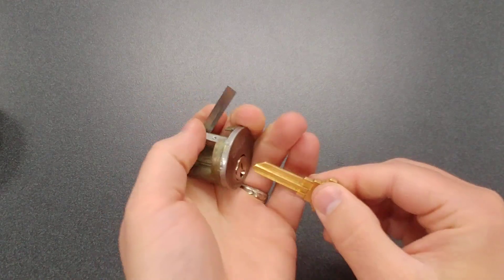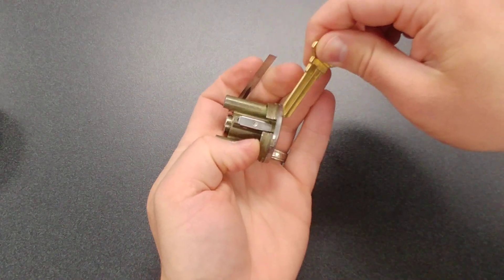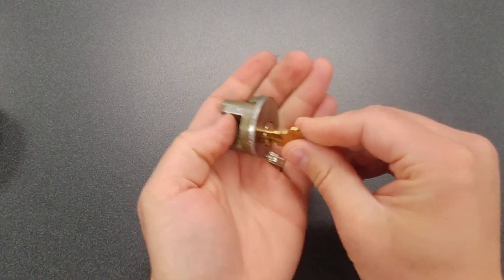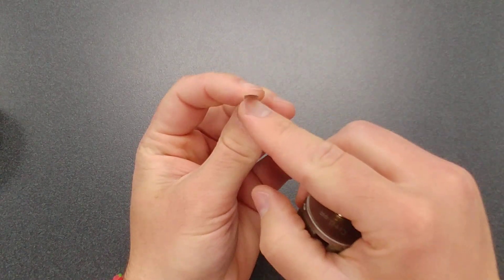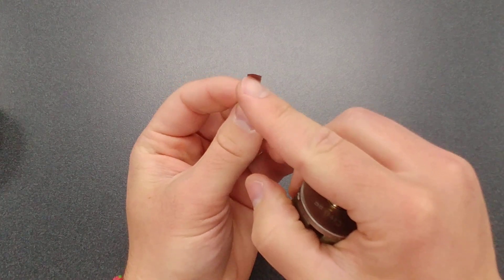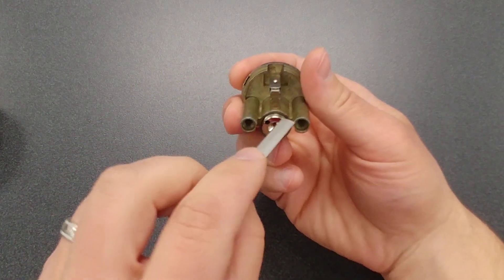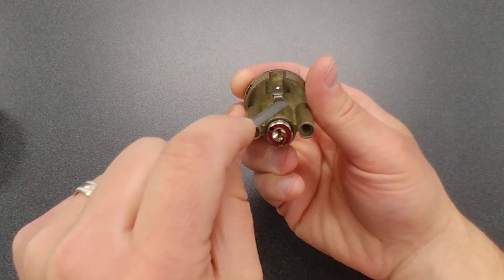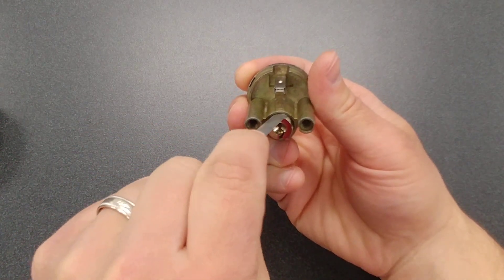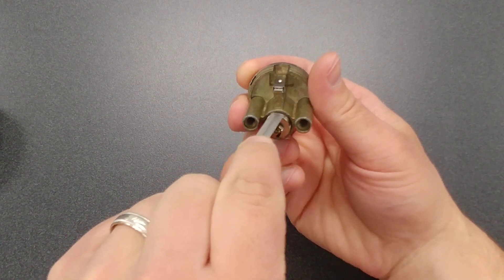We're going to start in the back and we're going to work our way to the front. So let's go ahead and just stick the key in the front here. We're going to grab the shim, make sure the curvature of the shim is down. You can see that kind of curves right here. So we're going to put this on the back on the shear line, which is where the top pin and springs and the bottom pins of the plug meet, which is right here. That's called the shear line.